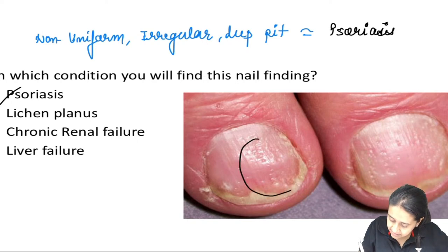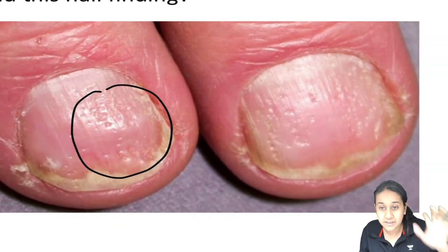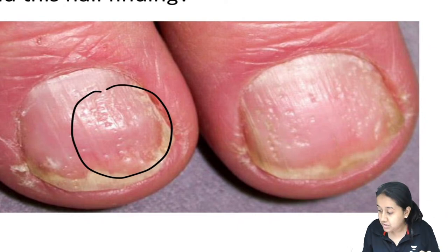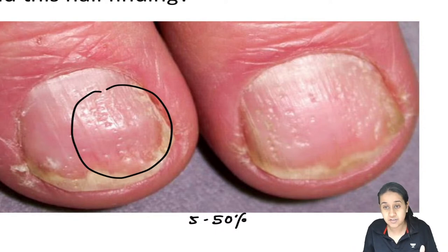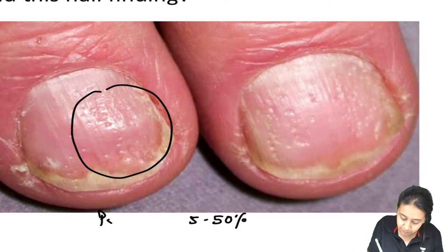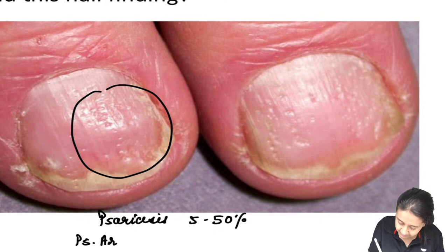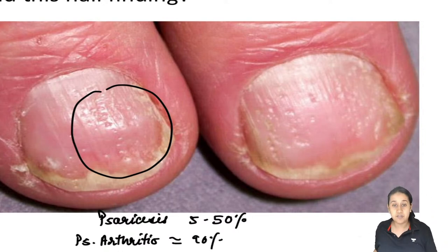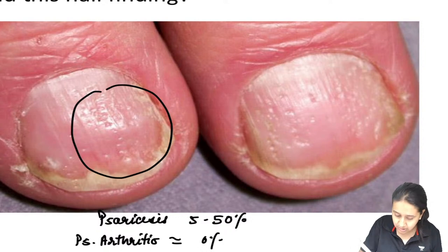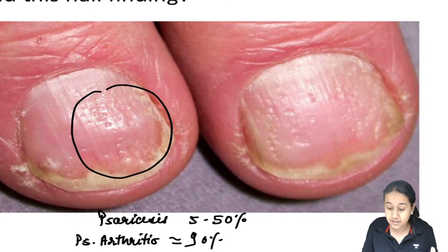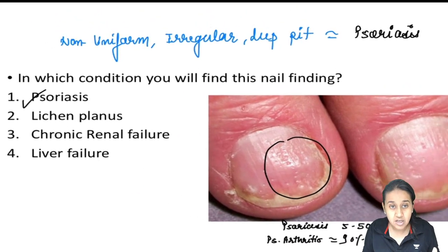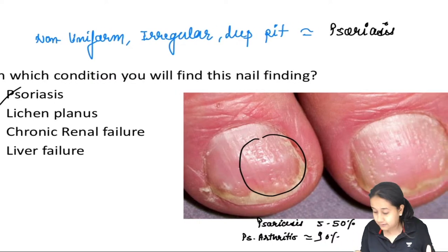You can see that the pits are present irregularly. Around 50% of total psoriatic patients develop nail changes. But in patients with psoriatic arthritis, the risk of nail changes increases from 50% to around 90%. So nail changes are more frequently seen in patients with psoriatic arthritis. The correct answer is option number 1.